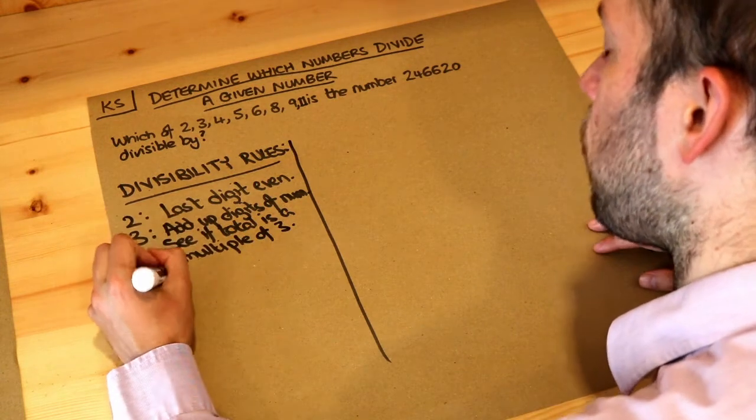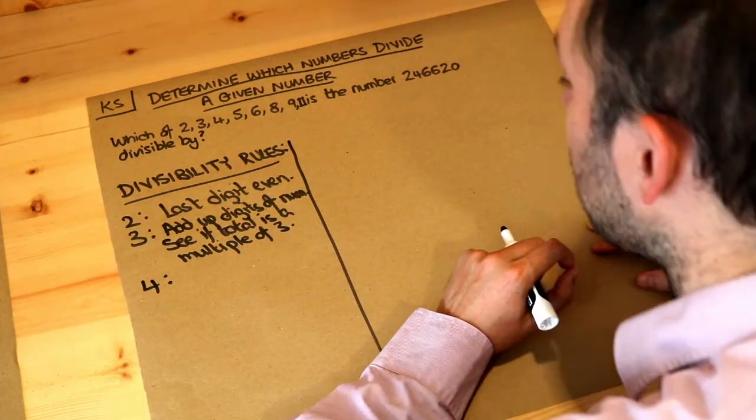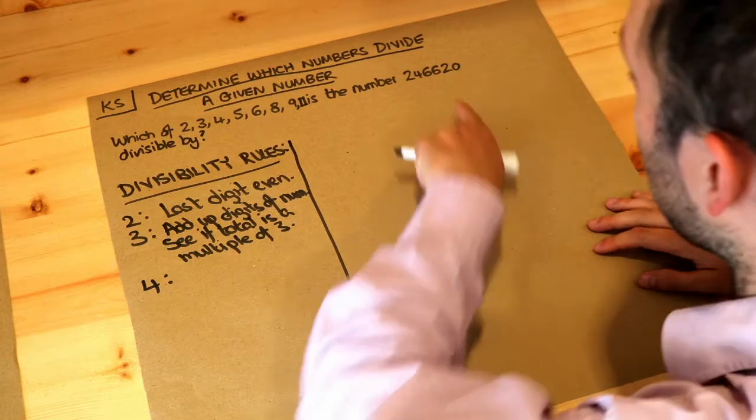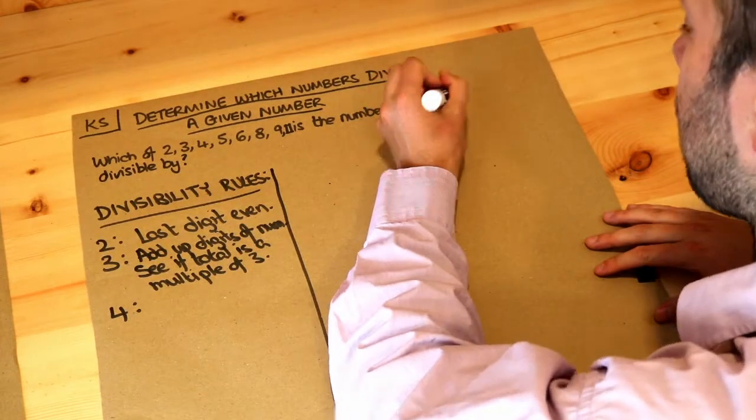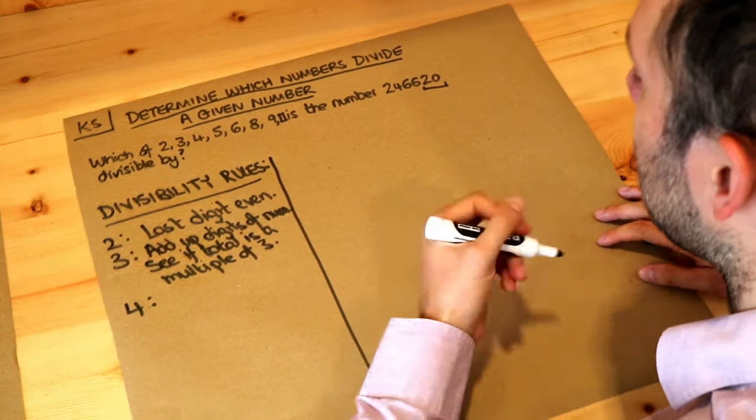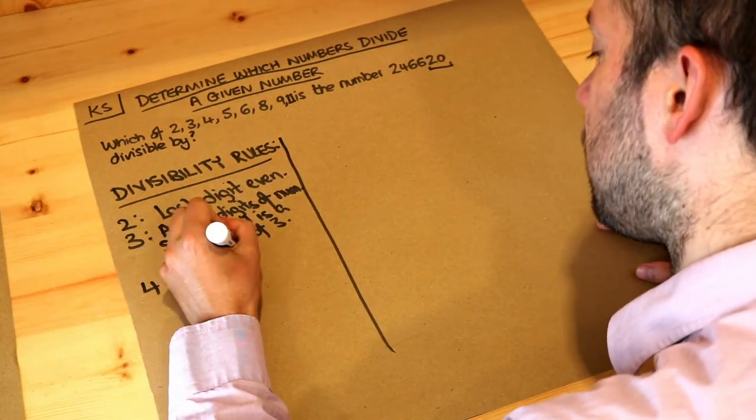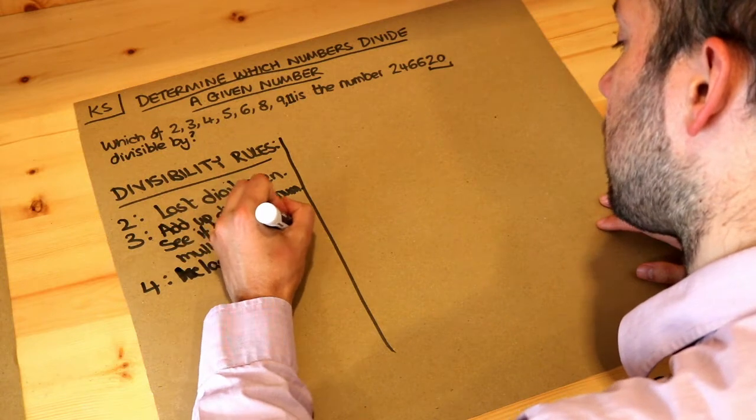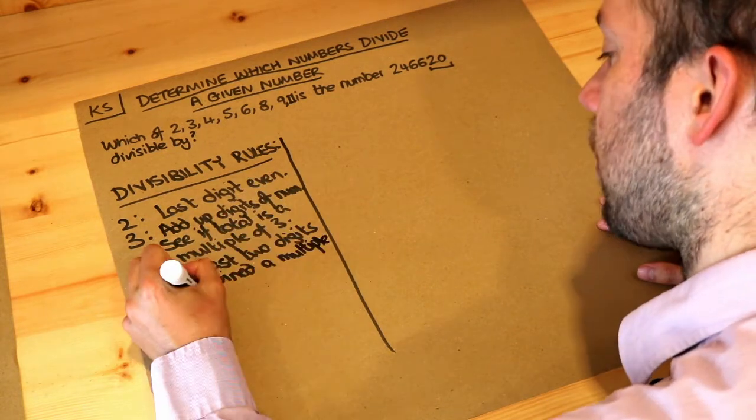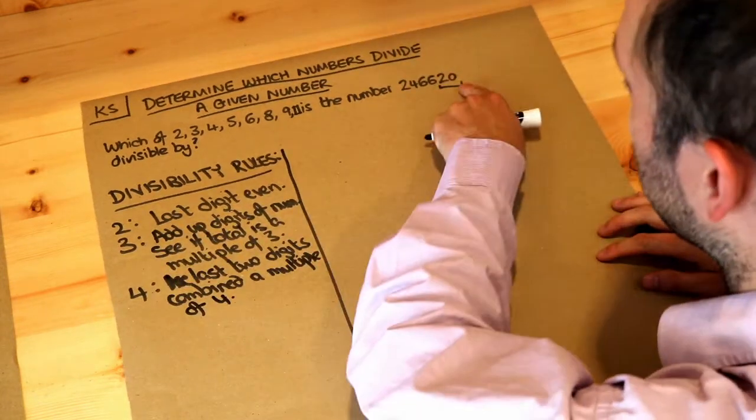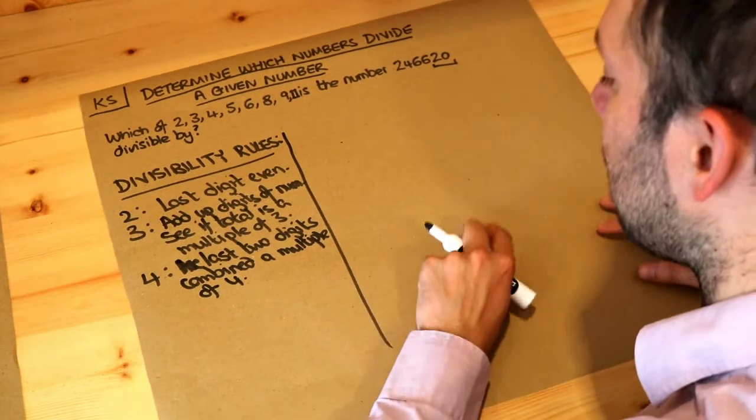What about the rule for 4? This one you possibly don't know. What you do is you look at the last two digits of numbers. So you just look at the last two digits of this number and see whether that number is divisible by 4. So are the last two digits combined a multiple of 4? So in this particular example we're going to see whether 20, the last two digits, is a multiple of 4.